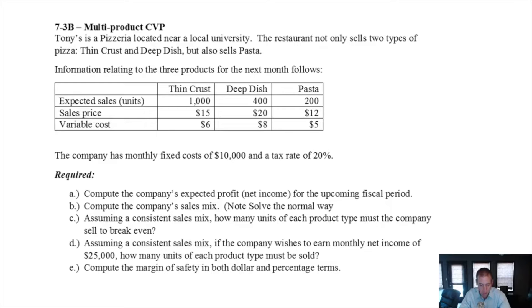Information relating to the three products for the next month follows. The company has fixed expenses of $10,000 and a tax rate of 20%. First thing, let's just check the margins on all these products, our CM per unit. Our CM per unit is $9 for thin crust, $12 for deep dish, and $7 per unit for pasta.